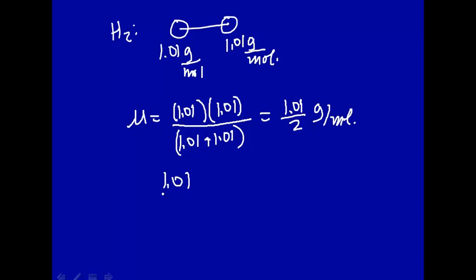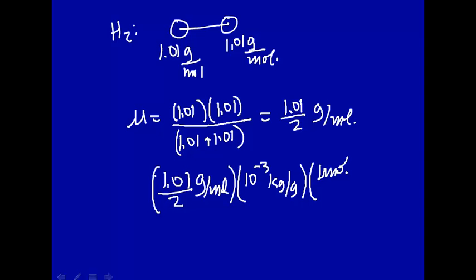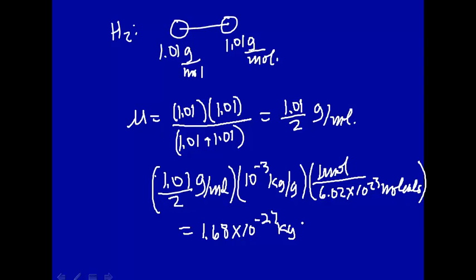Let's convert that into kilogram per molecule. So this is gram per mole, and we have to change to kilogram, 10 to the minus 3 kilogram per gram. And then we have to change mole to molecule, so this would be 1 mole per 6.02 times 10 to the 23rd molecules. And this comes out to be 1.68 times 10 to the minus 27th kilogram per molecule.